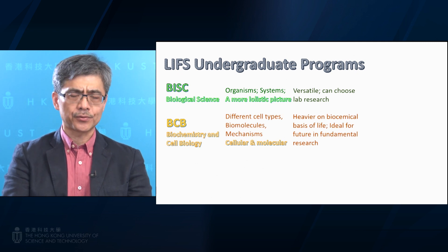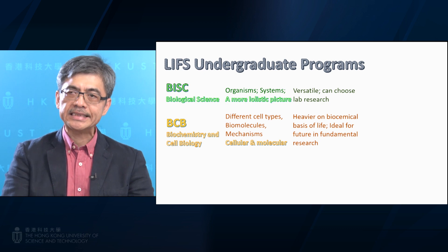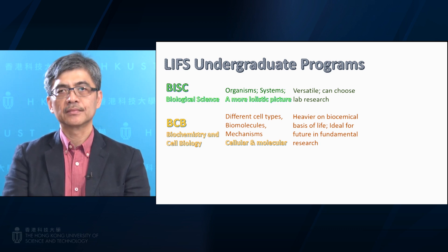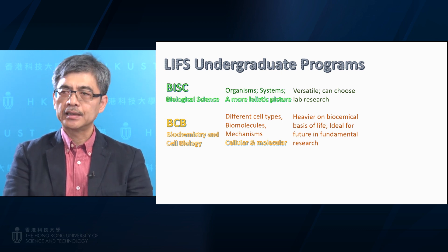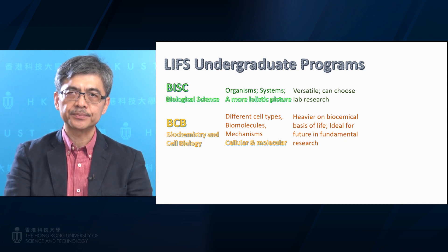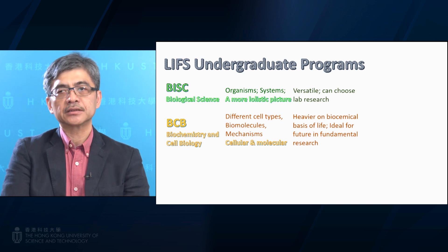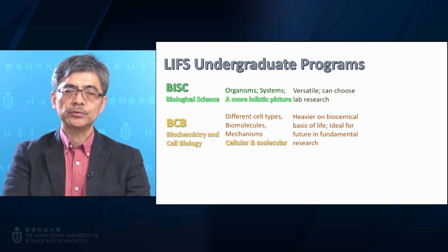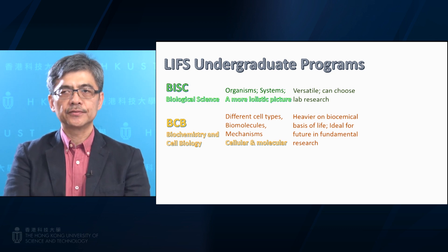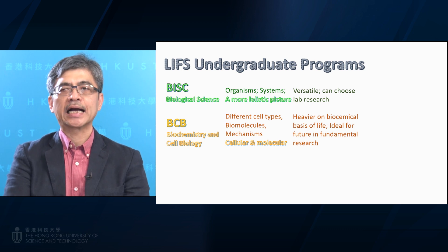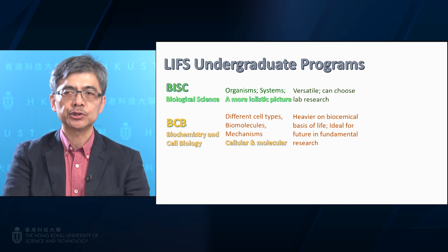For students who want to really focus and learn more about the detail underlying our life activities, they may pick Biochemistry and Cell Biology. We will study more in depth about cellular function, how biomolecules interact to produce cellular function, and what are the mechanisms underlying all these functions. We will look into fine detail in more advanced courses after learning the foundation. This kind of knowledge enrichment could provide a good foundation for students to pursue further study in life science — for example, in postgraduate school — and also for those who want to work in a research-related area.